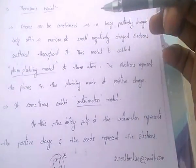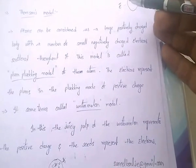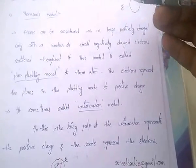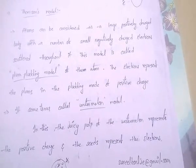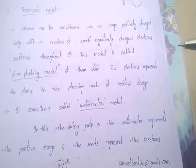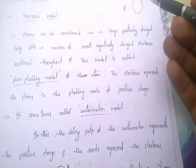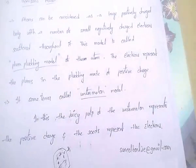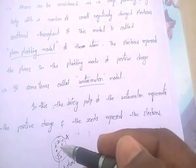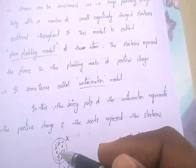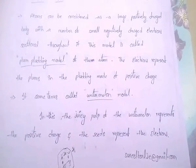According to Thomson's model, atoms can be considered as a large positively charged body with small negatively charged electrons scattering through it. This model is also called the plum pudding model — electrons represent the plums and the positively charged body represents the total pudding. It is also called the watermelon model, where all the pulp represents the positive charge and the seeds represent electrons.